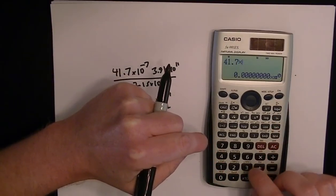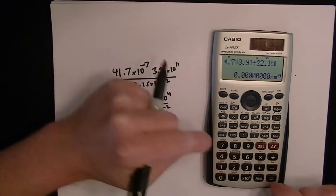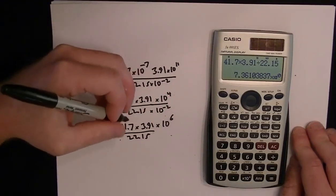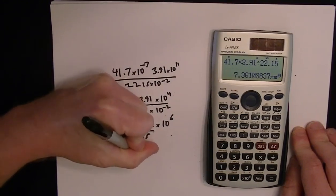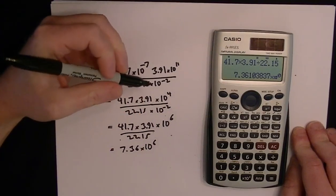41.7 times 3.91 divided by 22.15. And so it's not exactly 8, but the answer is 7.36. So that's 7.36 times 10 to the 6 is the final answer.